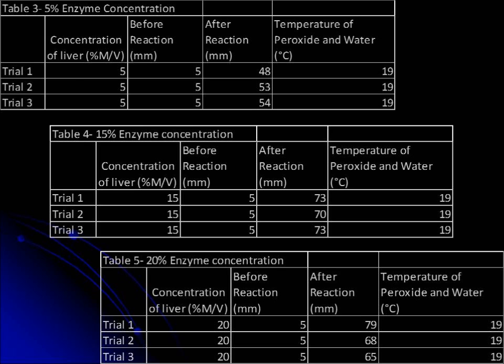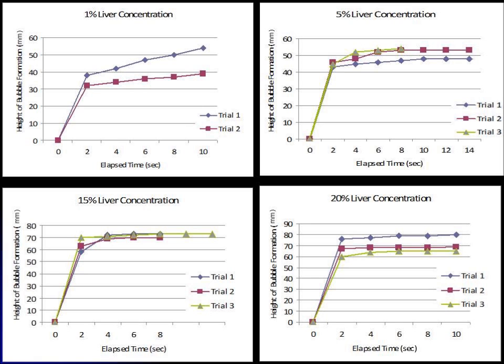Graphs were also constructed for each percent enzyme concentration to calculate the rate at which the reaction occurred, also defined as rise over run. In addition, an increase in rate of reaction can be seen overall as enzyme concentration increased.